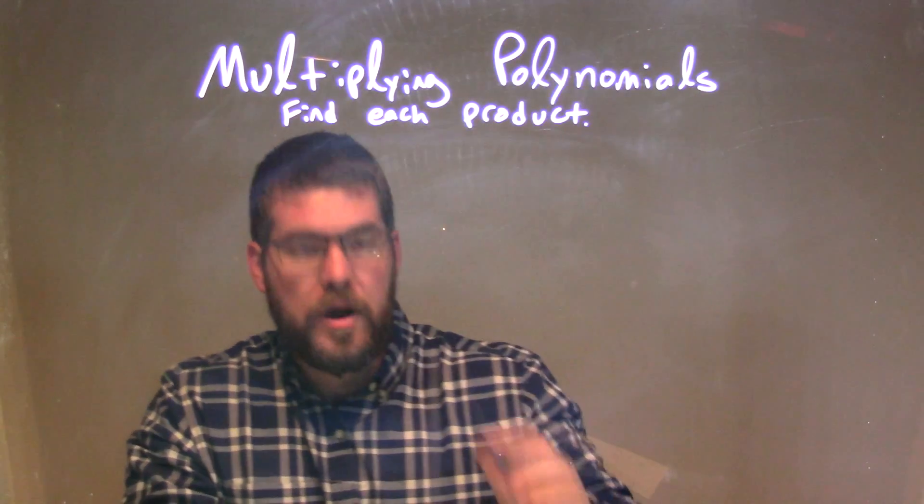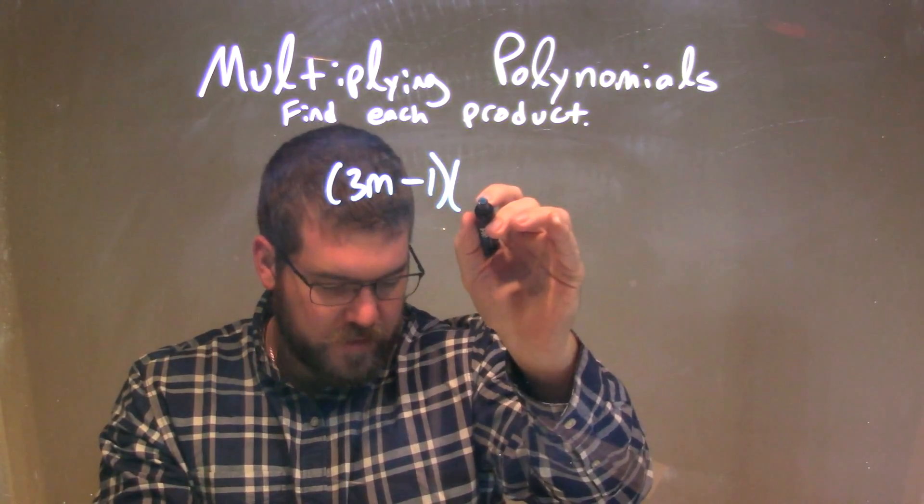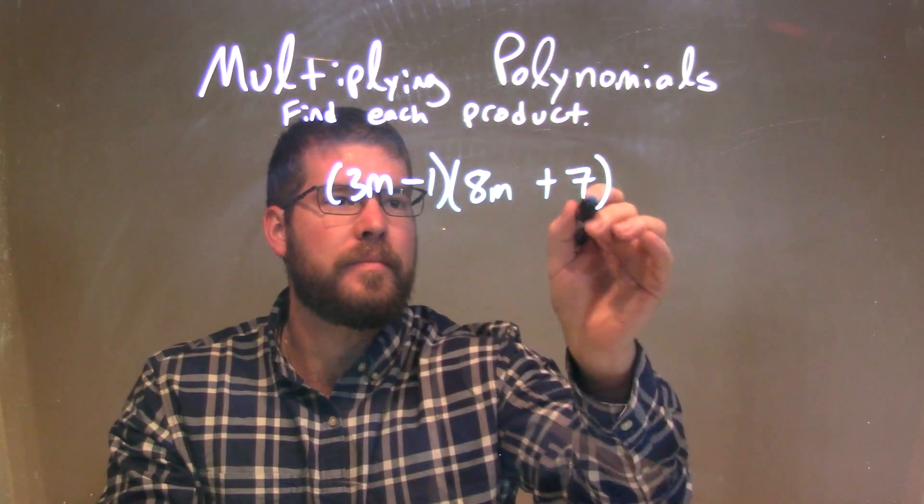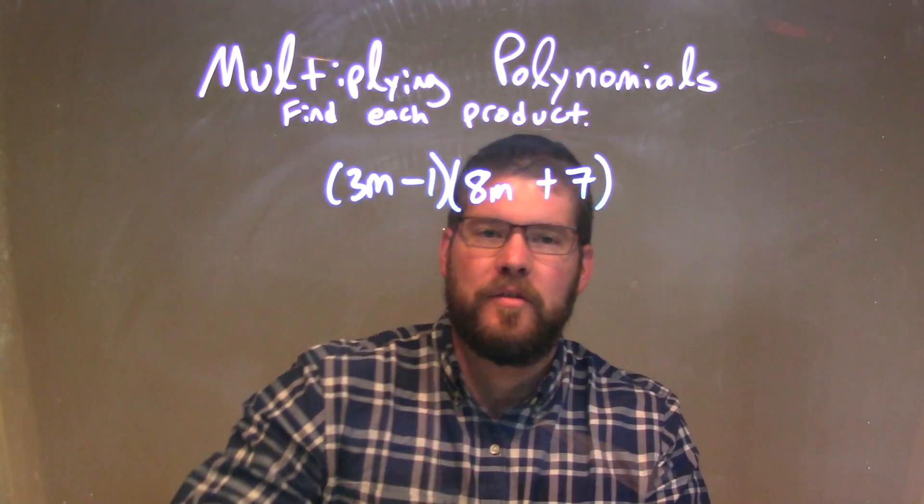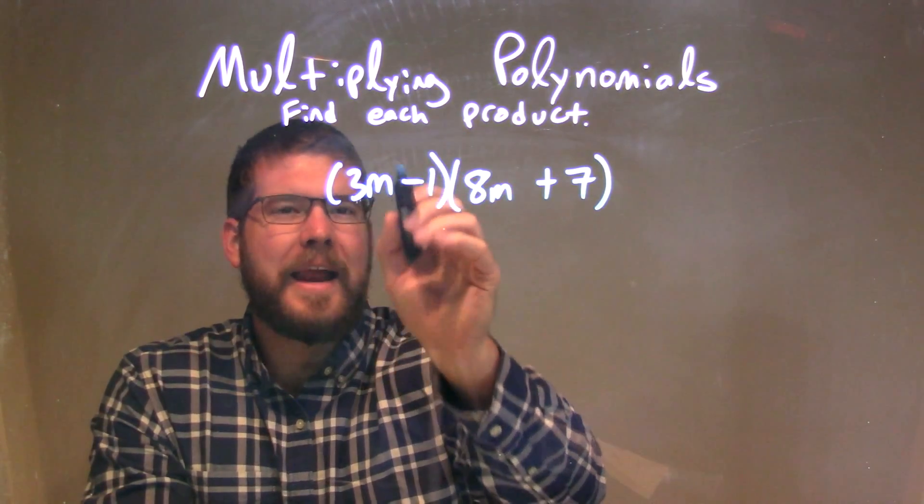So if I was given this problem here, 3m minus 1 times 8m plus 7. Well, we want to multiply all parts of my first parenthesis by all parts of my second parenthesis. So I like to draw arcs to show that I'm on each multiplication, so I don't forget anything.